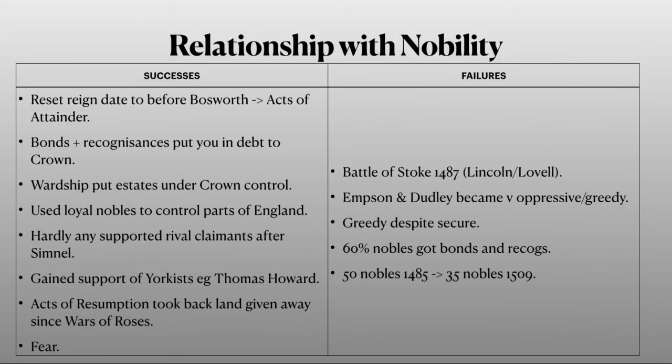Now some failures. Important nobles such as the Earl of Lincoln and Lovell were involved in the Battle of Stoke in 1487. Empson and Dudley, the men travelling around England to collect debts, were very oppressive and greedy — pretty much just thugs. He was very greedy with crown finances despite being a secure king. 60% of nobles were under bonds and recognisances, showing he did not trust them at all. The number of nobility decreased during his reign: at the start in 1485 there were 50 nobles, but by the end in 1509 there were only 35, showing Henry VII really reduced the power and influence of the nobility.